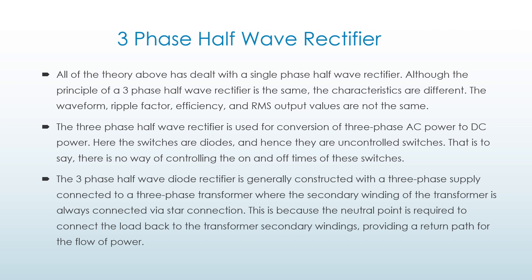The 3-phase half wave rectifier is used for conversion of 3-phase AC power to DC power. The switches are diodes and hence they are uncontrolled switches — there is no way of controlling the on and off times of these diodes. The 3-phase half wave rectifier is generally constructed with a 3-phase supply connected to a 3-phase transformer where the secondary winding is always connected via star connection, because the neutral point is required to connect the load back to the transformer's secondary winding.